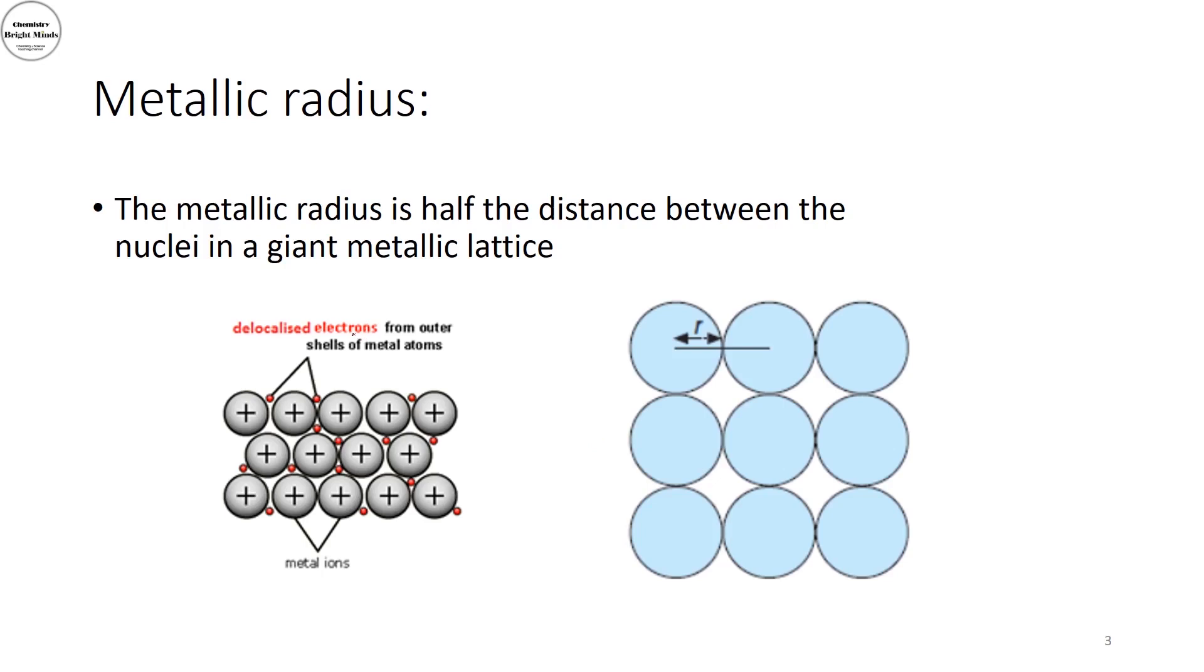Now the metallic radius trend of group 2. Before starting the metallic radius of group 2, we will look at the definition of metallic radius. Metallic radius is usually the radius that we take for metals and in metallic giant metallic lattice, half the distance between two nuclei will be my metallic radius.